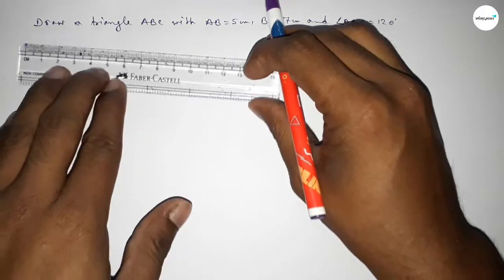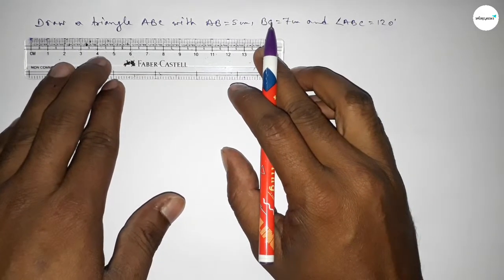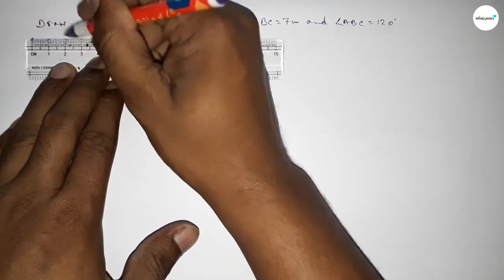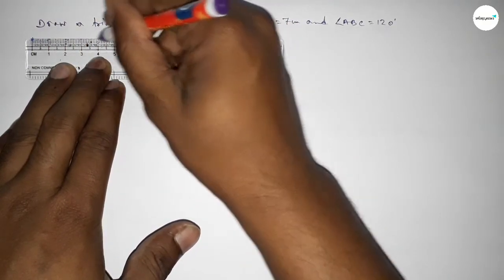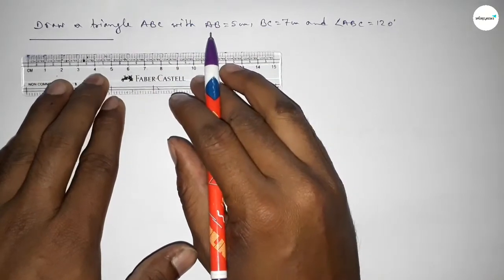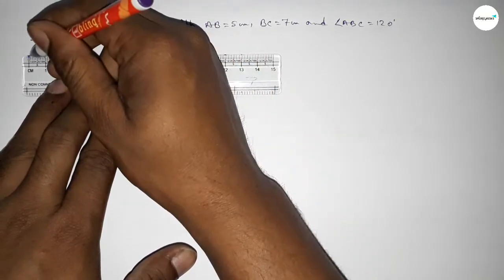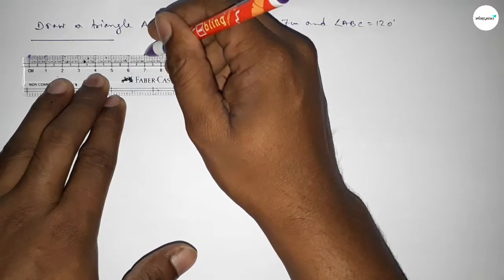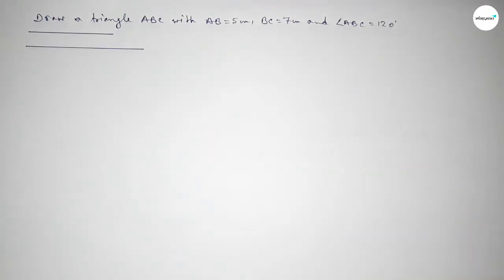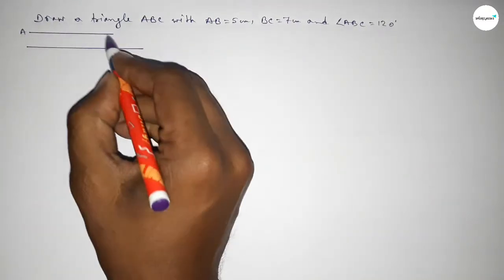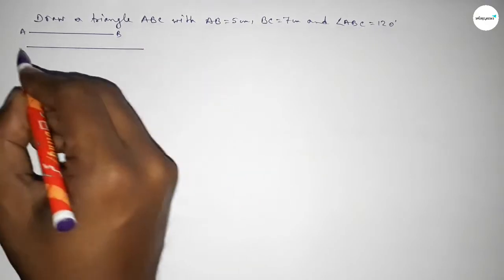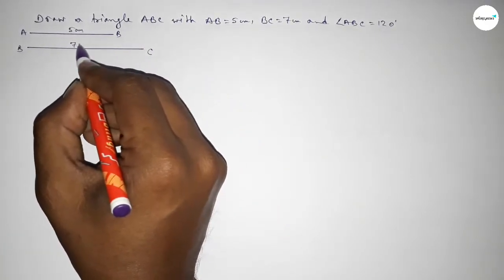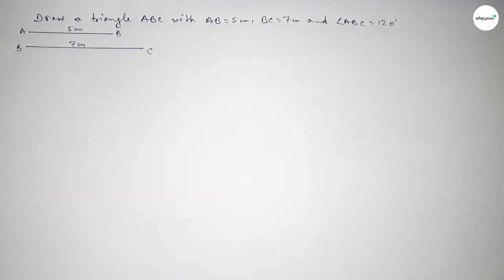First of all, drawing here two lines. First drawing a line of length 5 centimeters — this is 5 centimeters — and drawing another line of length 7 centimeters. This line is AB and this one is BC, so this is 5 centimeters and this is 7 centimeters.